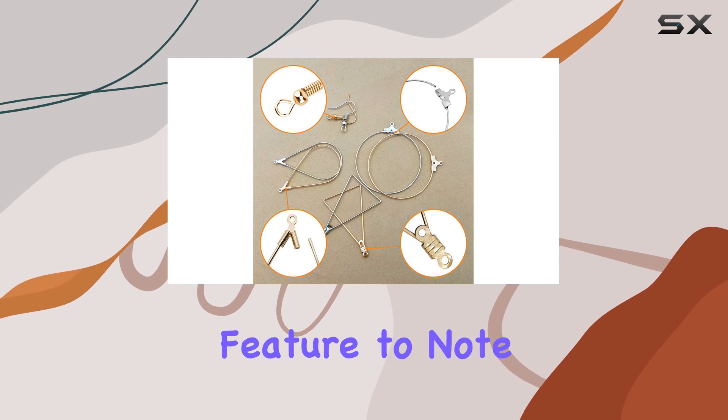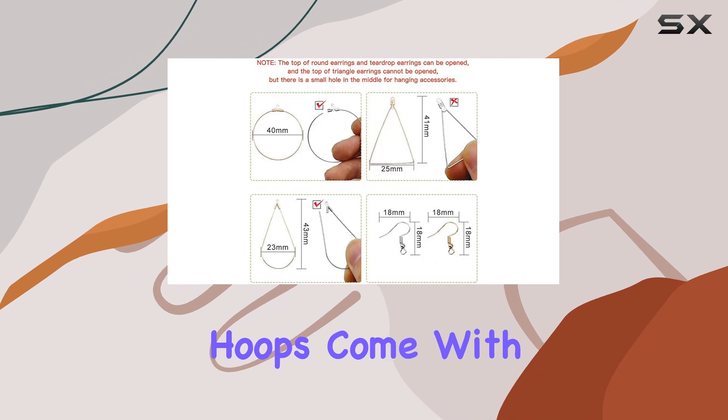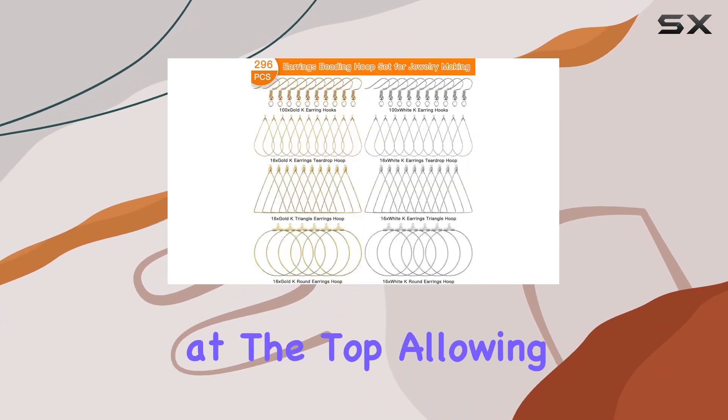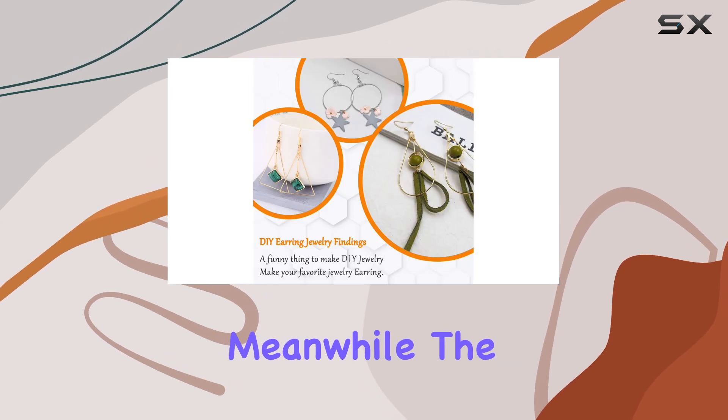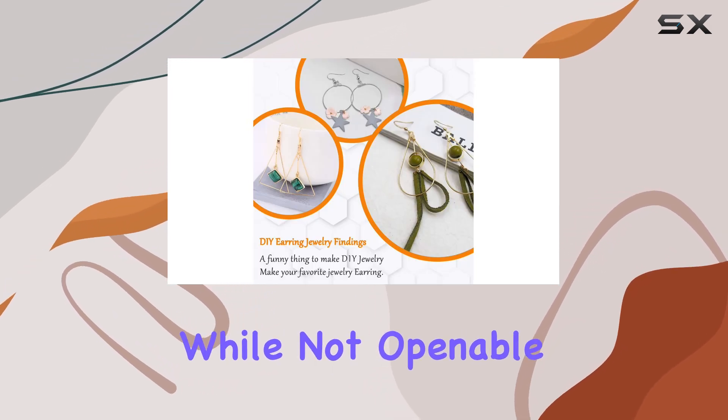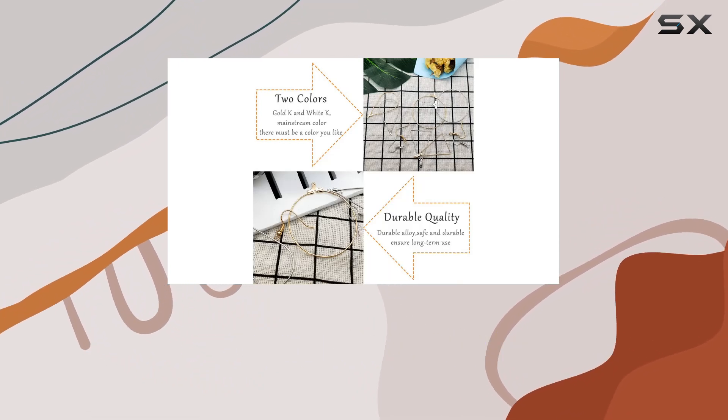An interesting feature to note is the design of the earring closures. The round and teardrop hoops come with an opening mechanism at the top, allowing you to easily add beads, charms, or other decorations. Meanwhile, the triangle hoops feature a small hole in the middle, which provides an alternative way to embellish or hang accessories.